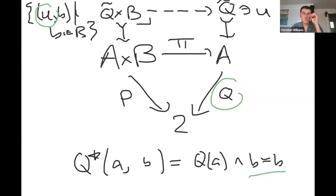Now we're talking about the left and right adjoints of that weakening, which can be seen as a generalization of the duplication.